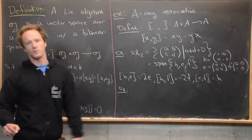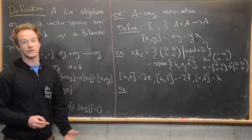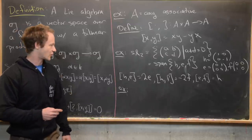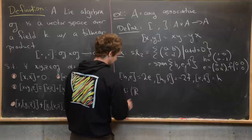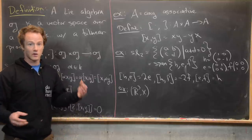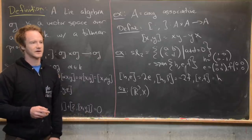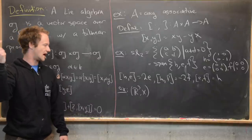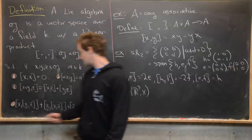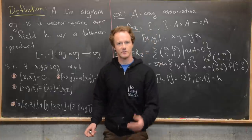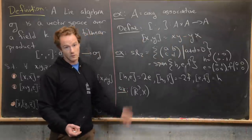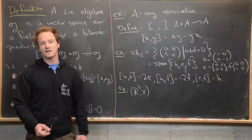Another example familiar from calculus or linear algebra is three-dimensional vectors with the cross product: ℝ³ with ×. The cross product — normally calculated by taking the determinant of a matrix with first row i, j, k — is non-associative and non-commutative, but it does satisfy the Jacobi identity. So it plays an important role as a Lie algebra as well.